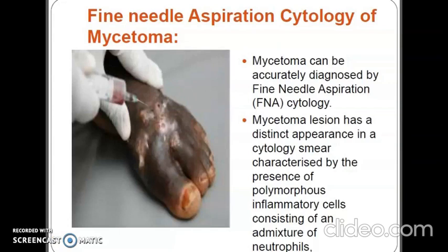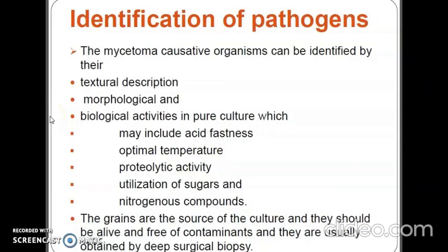Mycetoma on cytology smear is characterized by the presence of polymorphous inflammatory cells consisting of a mixture of neutrophils and other cells. The causative organism can be identified by morphological and biological activities in pure culture, including acid fastness, optimal temperature, proteolytic activity, and utilization of sugars and nitrogenous compounds. Since grains are the source of culture, they should be alive and free of contaminants and are usually obtained by deep surgical biopsy.